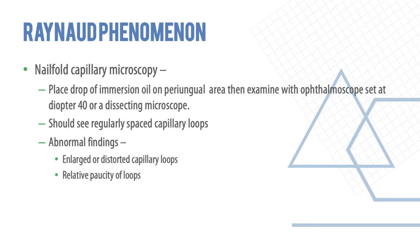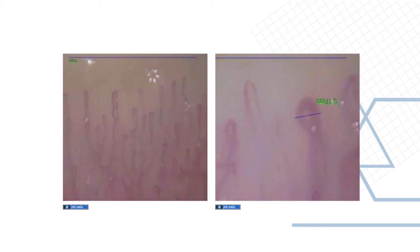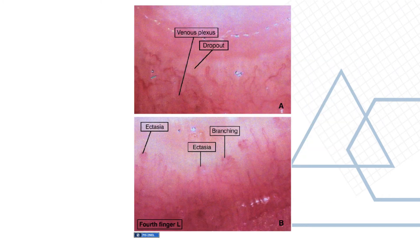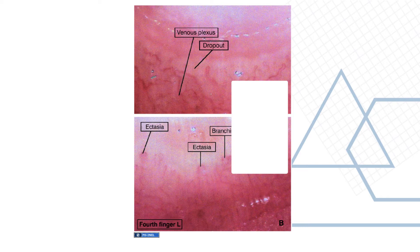You can also perform capillary microscopy of the nail folds by placing a drop of oil on the periungual area and examining with an ophthalmoscope set at 40 diopters or a dissecting microscope. You should see irregularly spaced capillary loops. Abnormal findings include enlarged or distorted capillary loops and relative paucity of loops, as shown in this electron microscopy example.